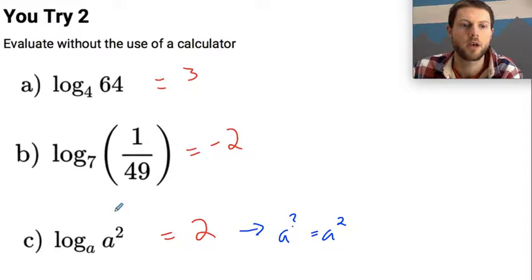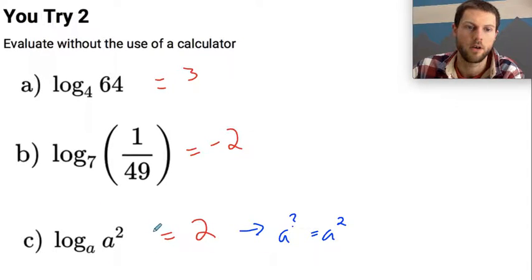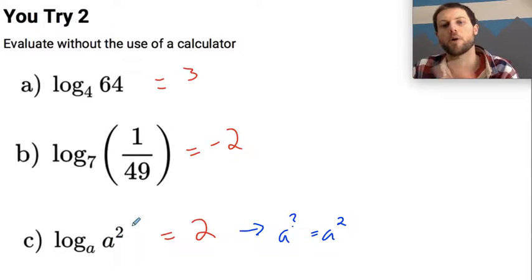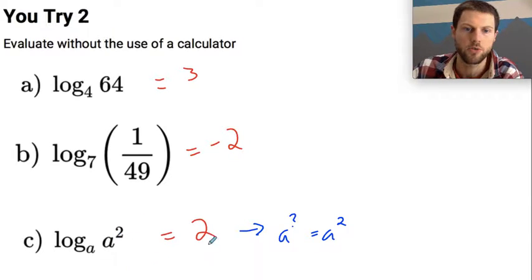All right, and here are my answers. This last one was kind of tricky, because I needed to think of, I have this exponent inside of my log, but as long as you rewrote this in exponential form, a to the what equals a squared, then you can kind of see this comes out to be 2. So it doesn't really matter what this a is.